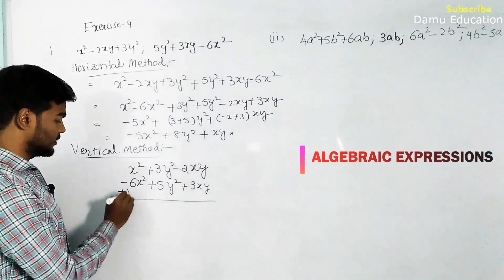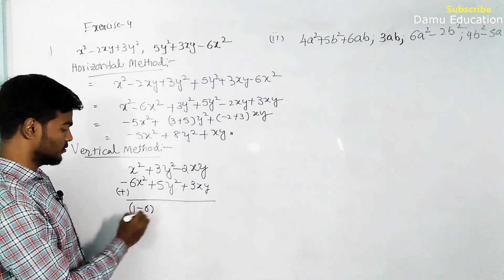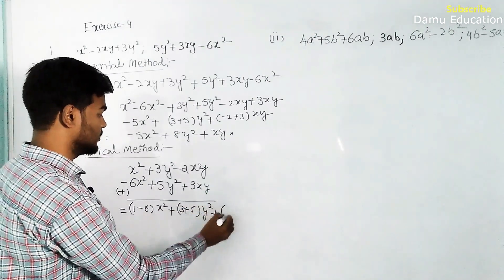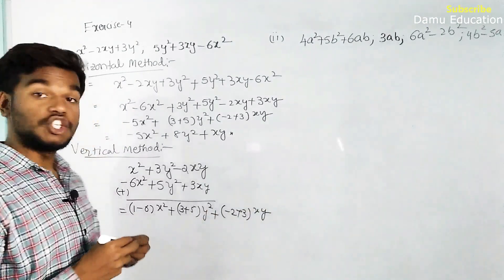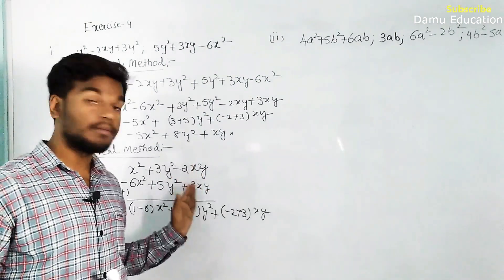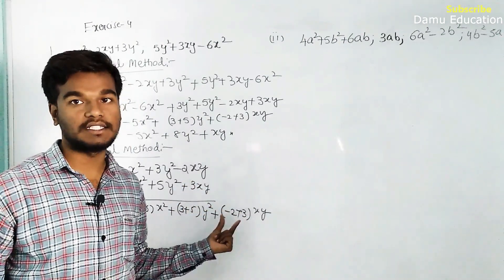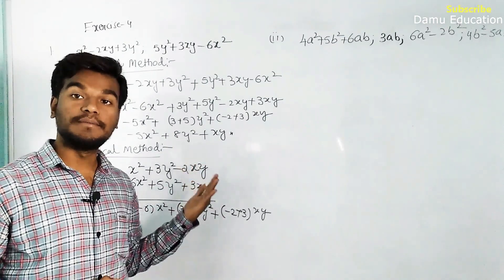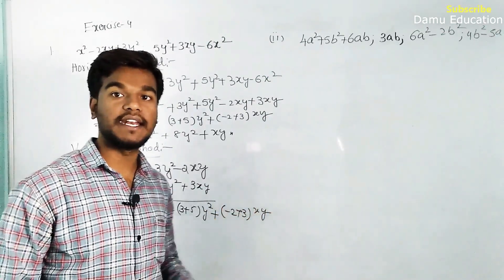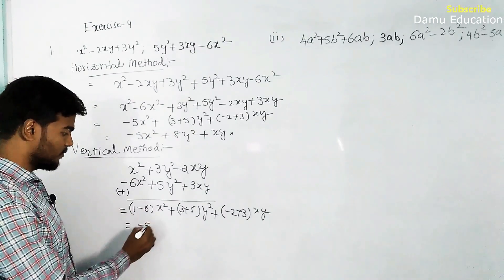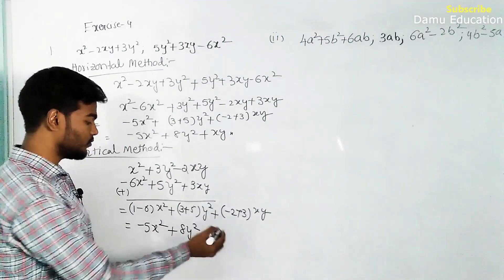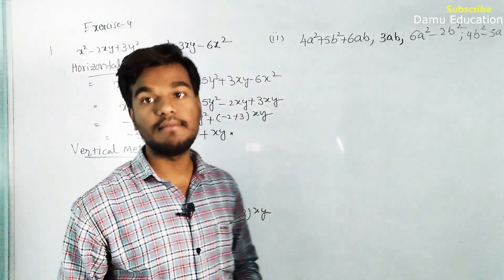Write minus 6x² plus 5y² plus 3xy below the corresponding terms. In addition, no sign conventions need to change. So 1 minus 6 gives minus 5x², 3 plus 5 gives 8y², and minus 2 plus 3 gives plus 1xy. Both horizontal and vertical methods give the same answer.